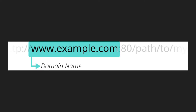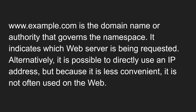The next part is www.example.com — this is normally called the domain name. It is the domain name or authority that governs the namespace. For example, example.com is the domain name; it indicates which web server is being requested.